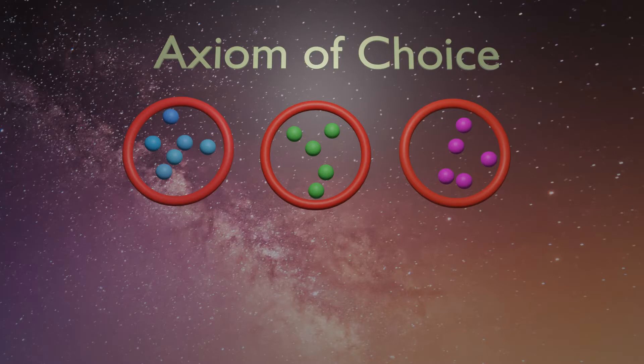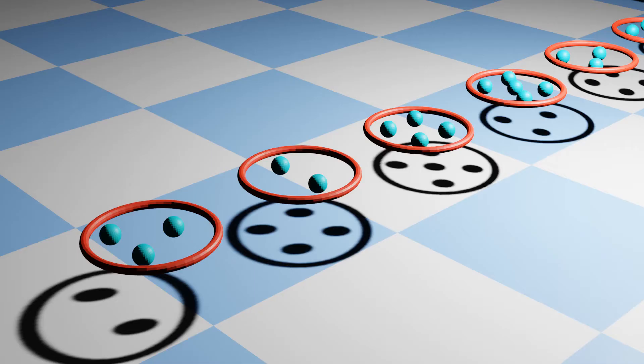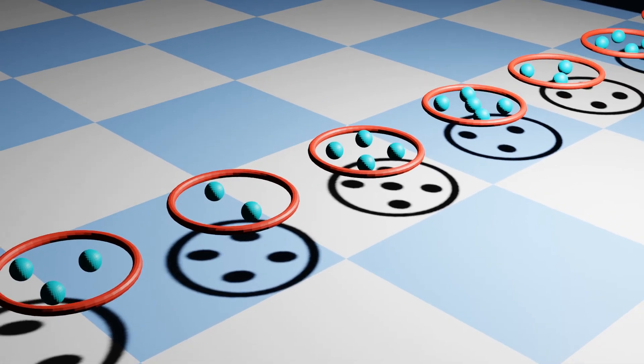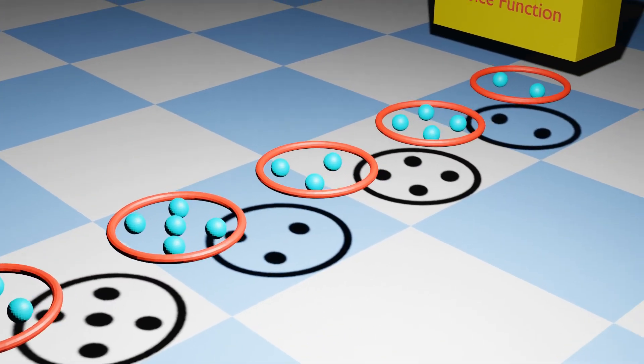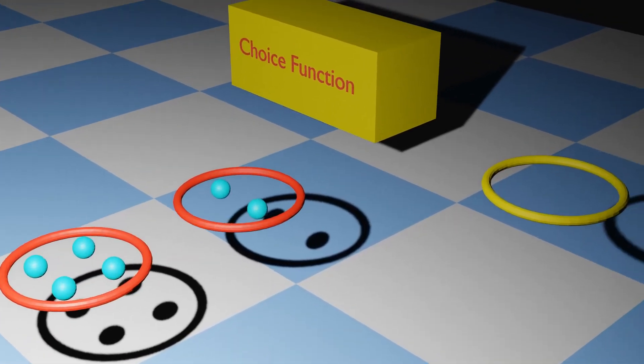The axiom seems pretty simple at first. Given a collection of non-empty sets, we can choose one element from each set. Given any collection of sets, it is possible to assemble a new set containing exactly one element from each member of the given collection.